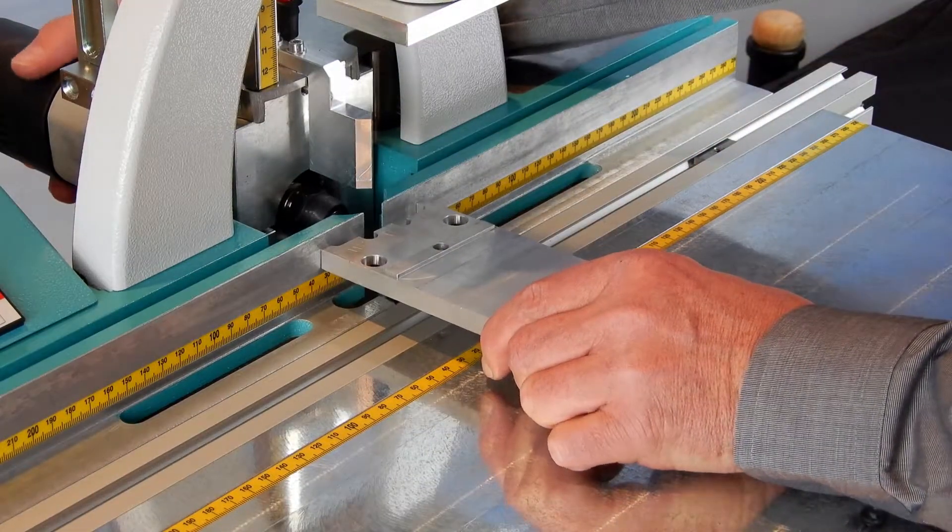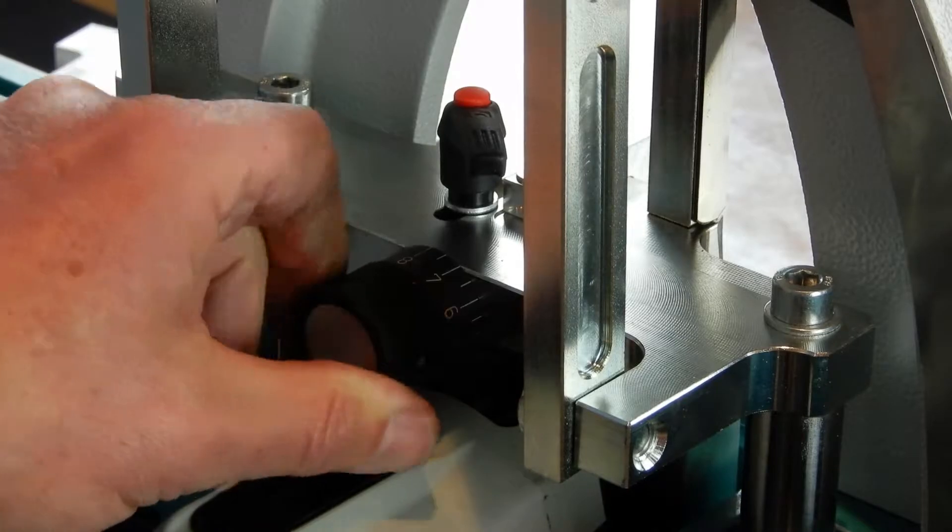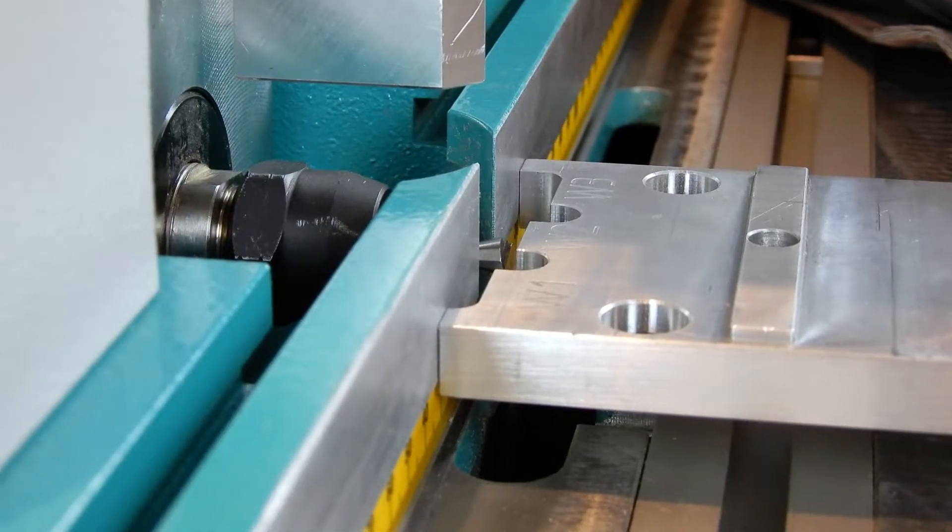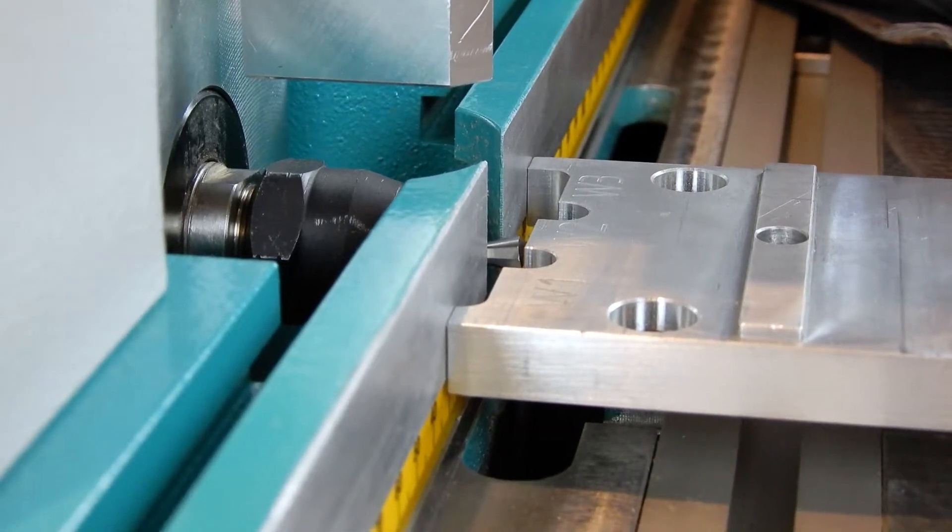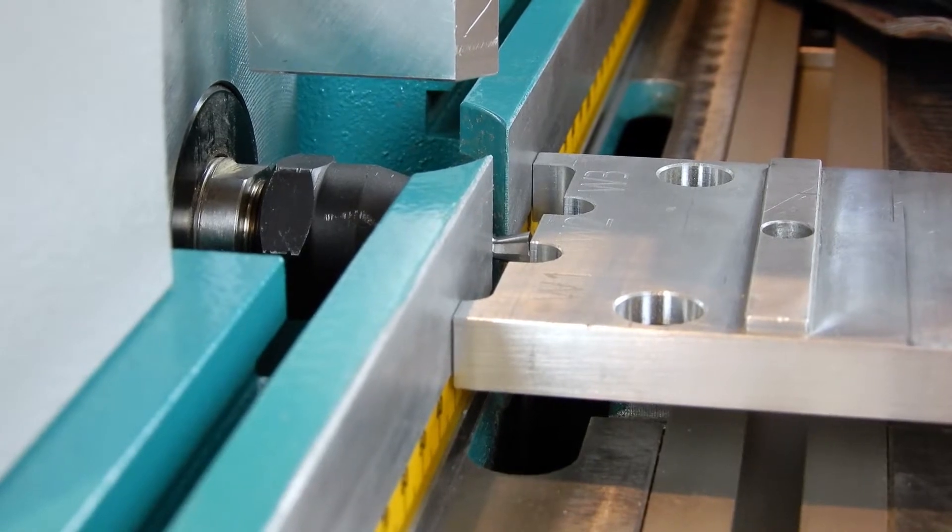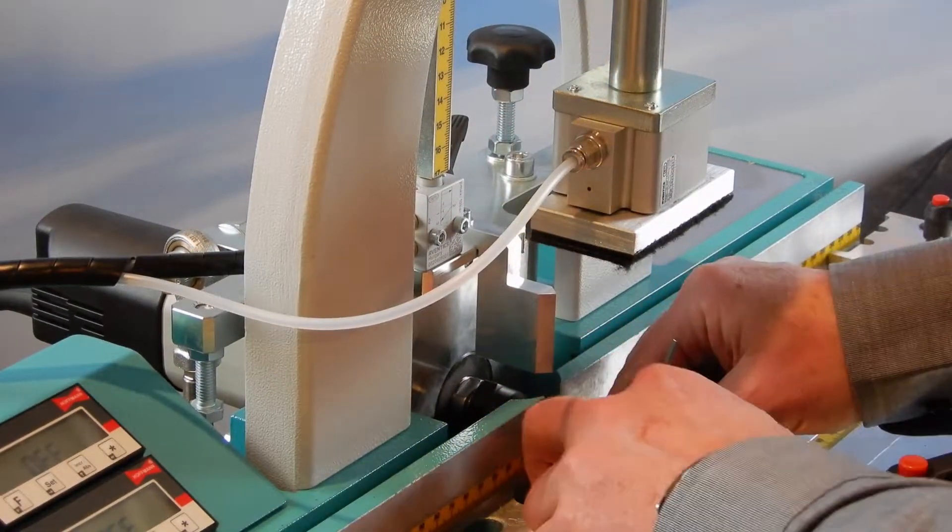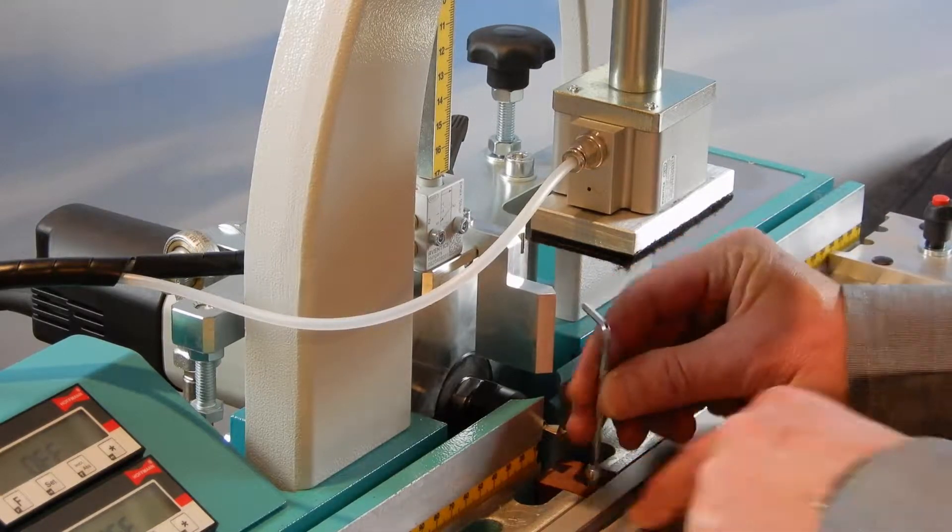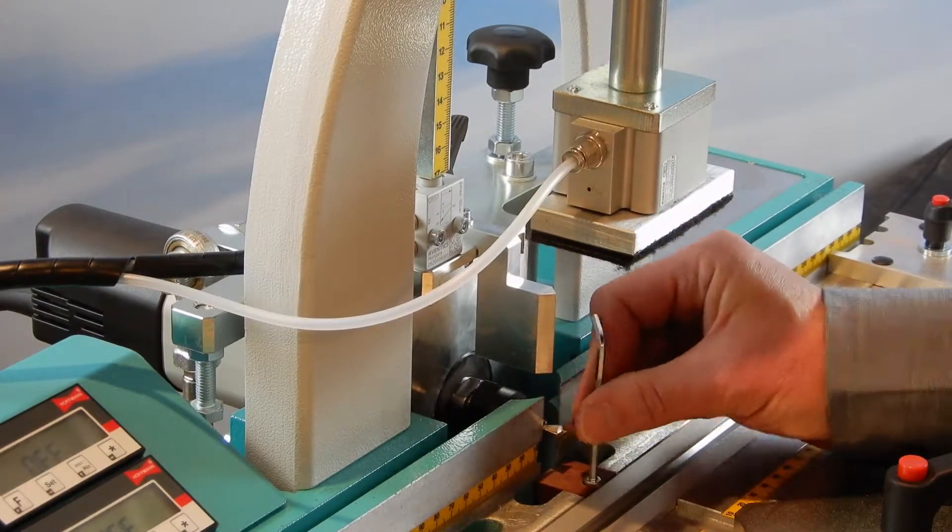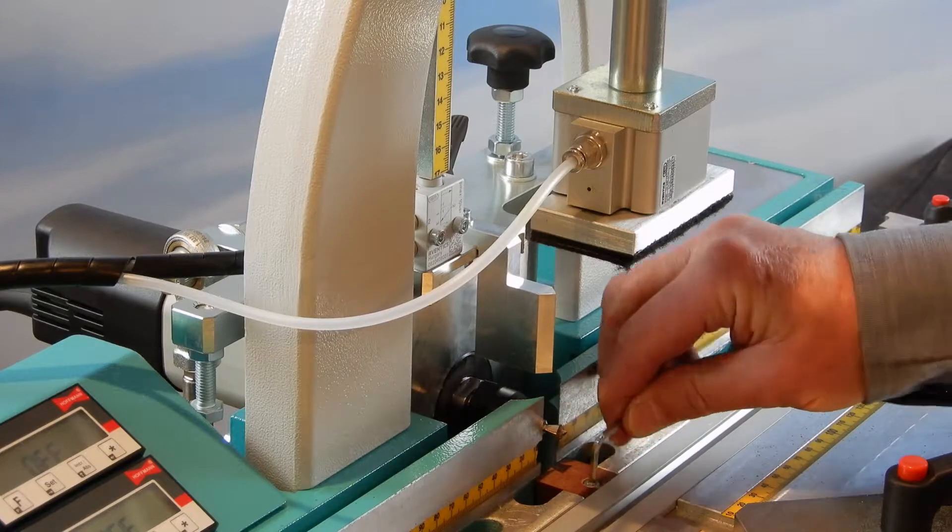By turning the knob on the rear side of the motor plate you can move the cutter towards or away from the operator. If you have found the right position, you install the new chip breaker.